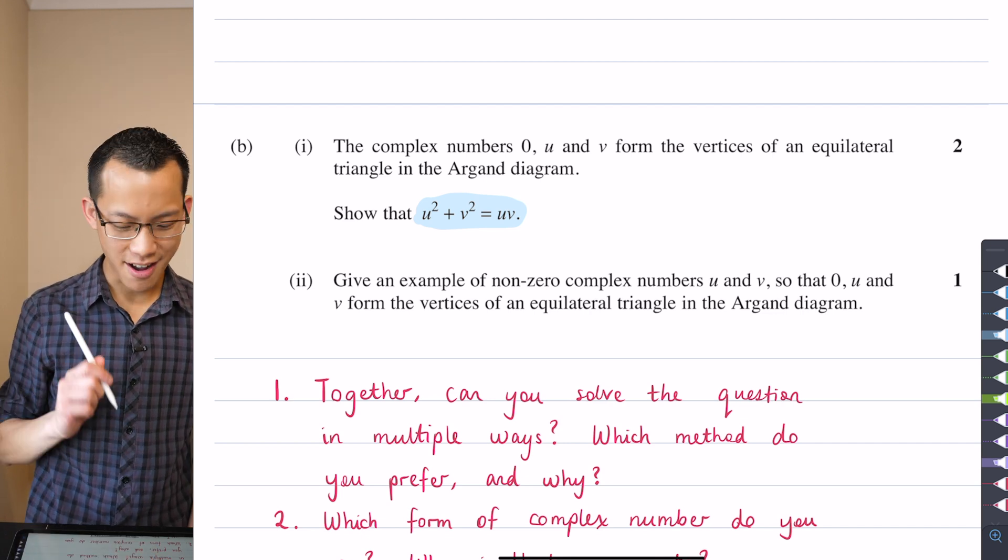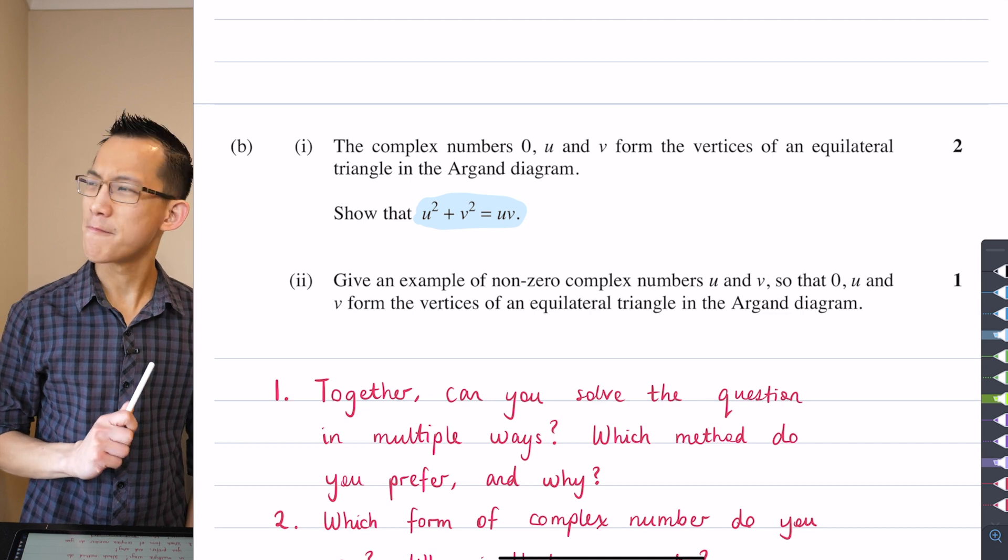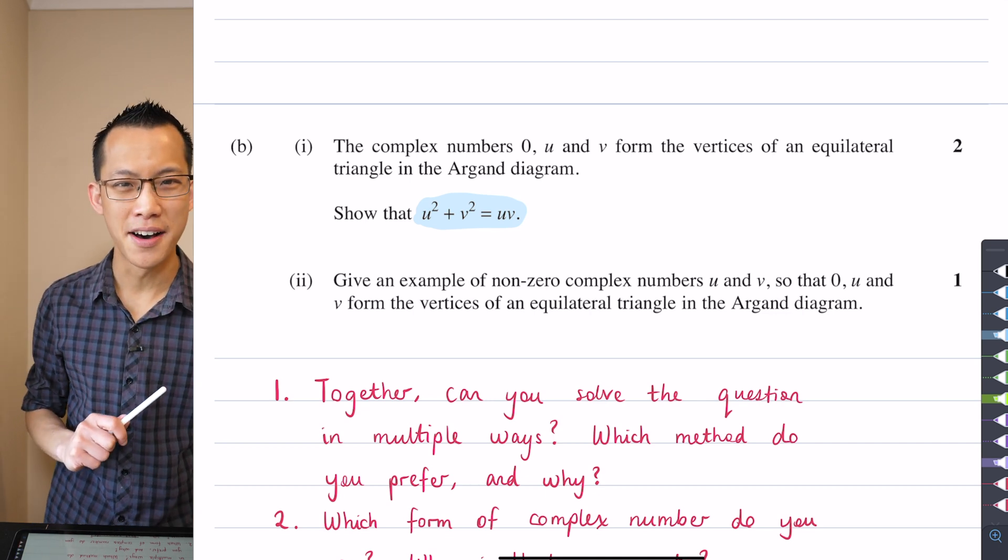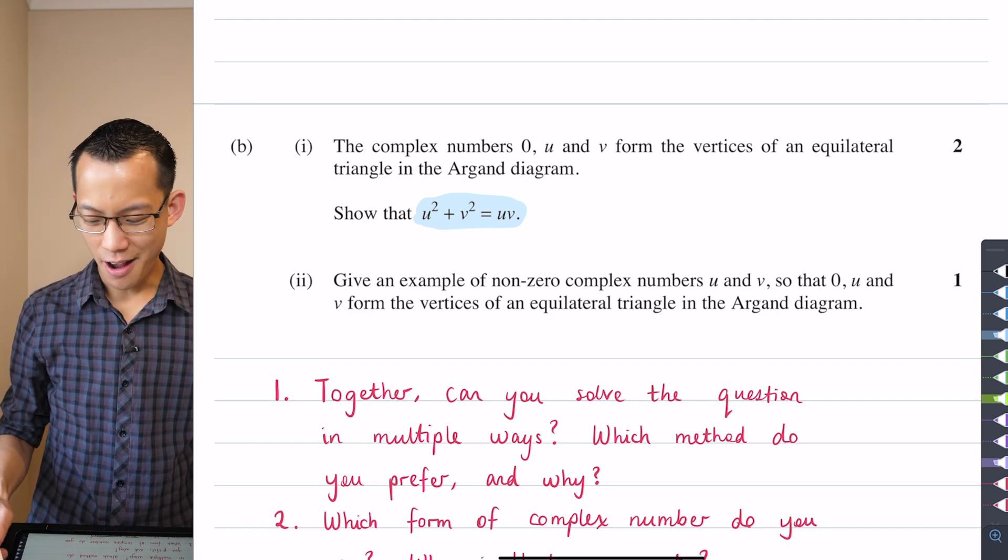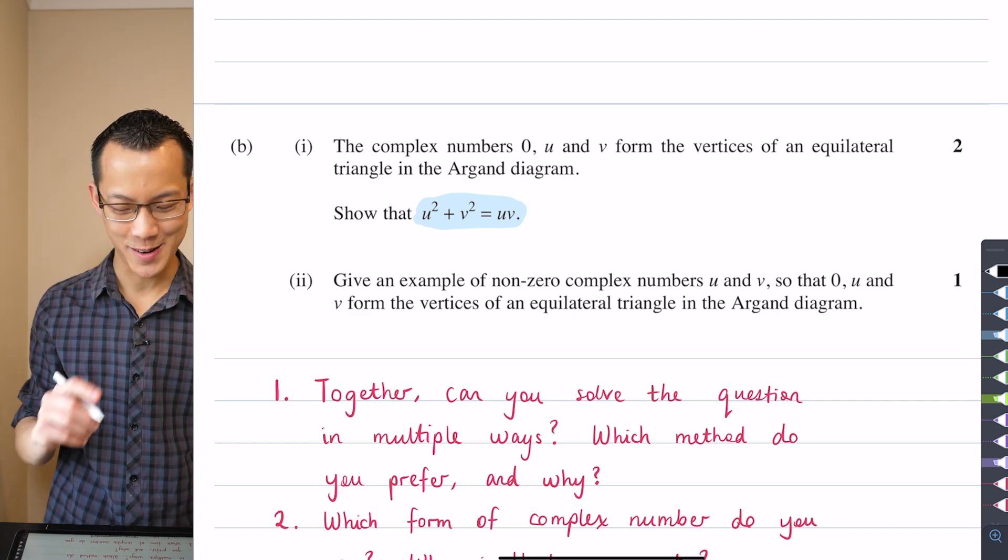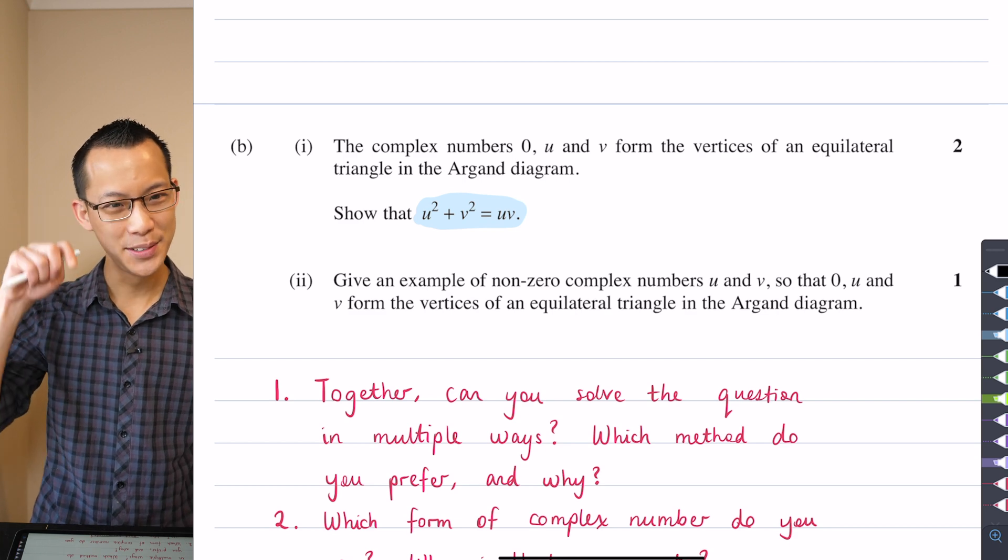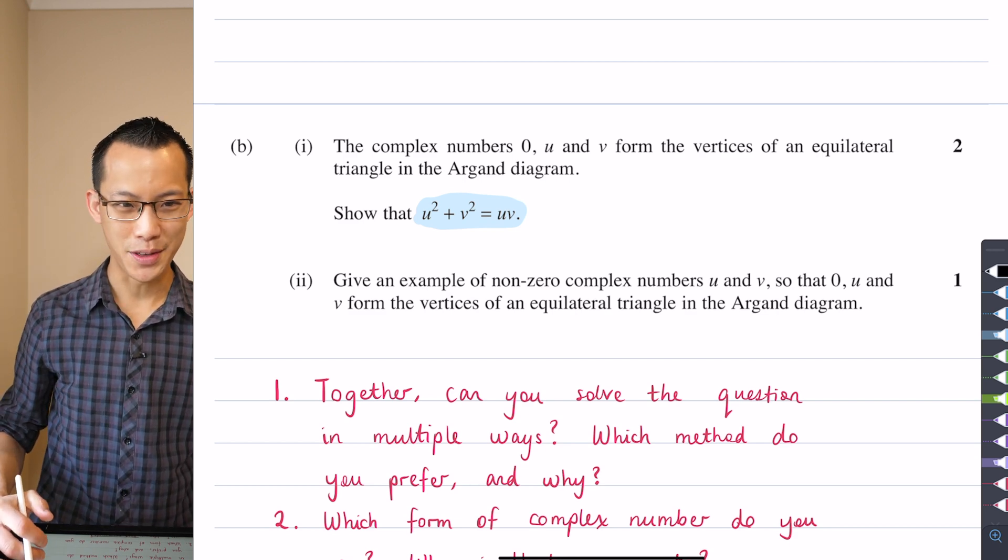whether it actually looks familiar for another reason. Whether you can see, hold on a second, this U squared and V squared and UV, don't they come together in some other result, some other package that I've seen before? I wonder if you recognize it yet. I'm not going to spoil it just yet.